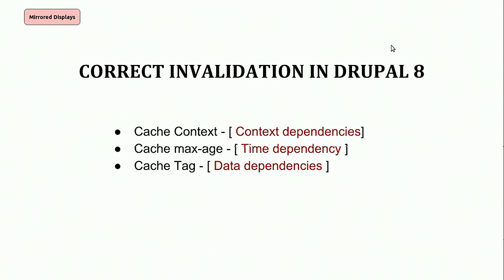When we use cache context, it's cache-context-dependent — sometimes you want the page to display user-specific content, or content specific to a URL. Cache max age is used for content that changes within some time period, like blocks fetching Twitter feeds or feeds from third-party sites. And cache tags are totally dependent on the data that Drupal renders. Even after putting up cache for everything, there's still a problem I want to discuss.